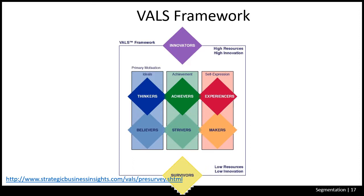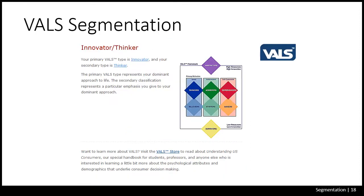The VALS system uses proprietary psychometric techniques to measure concepts that researchers have proven correlate with consumer behavior. You can take the VALS survey at strategicbusinessinsights.com — it takes very little time but gives you a good indication of who you are and what you're looking for. One sample result shows a person as an innovator and thinker: the primary type represents your dominant approach to life, while the secondary type represents a particular emphasis you give to that dominant approach.